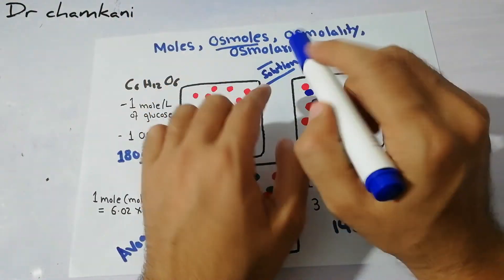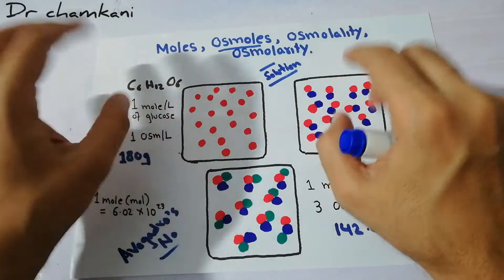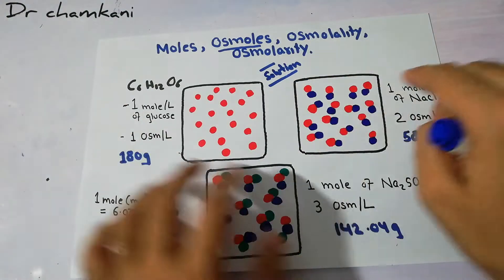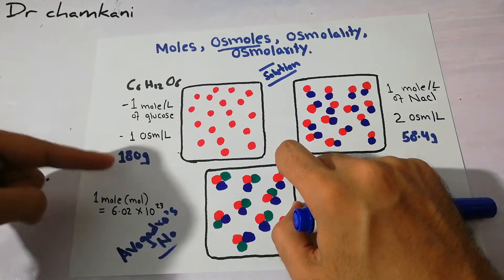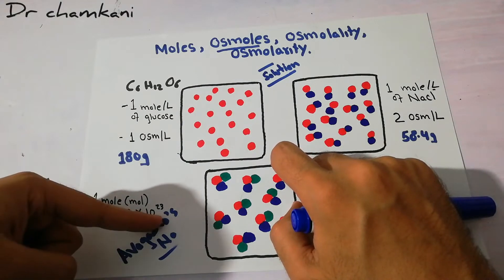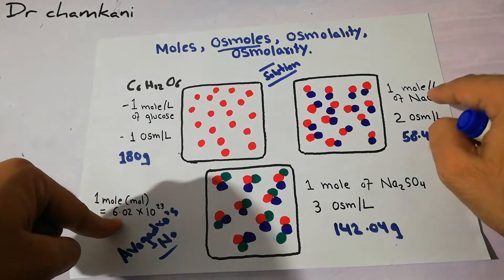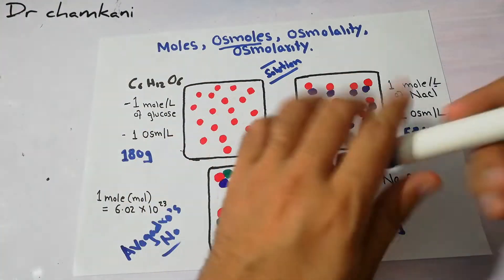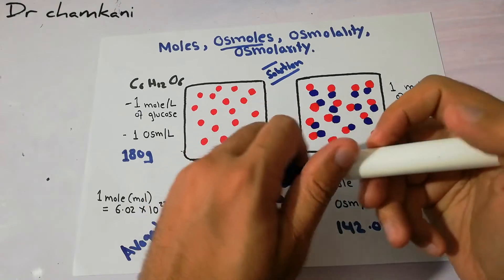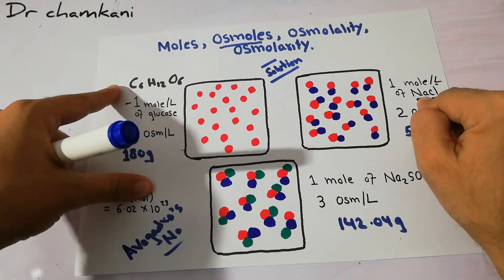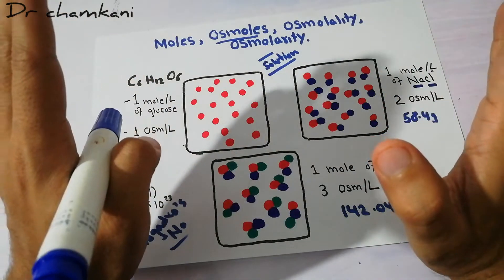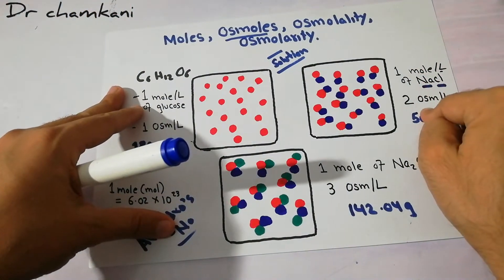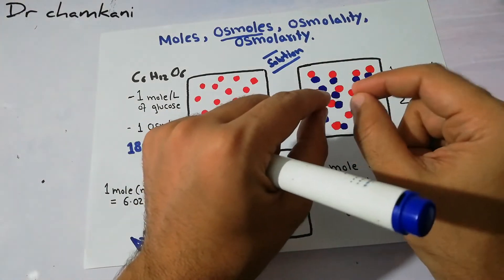Those active particles are not always the same. In one mole of glucose, the number of particles in 180 grams is 6.02 × 10²³, and the number of active particles is also that many. But in the case of sodium chloride, once it is in a solution — once sodium chloride is in water — it splits into two particles: sodium and chloride, which are separately osmotically active. So one mole of sodium chloride has two osmoles. Osmol is the number of active particles in a solution; mole is the molecular weight.